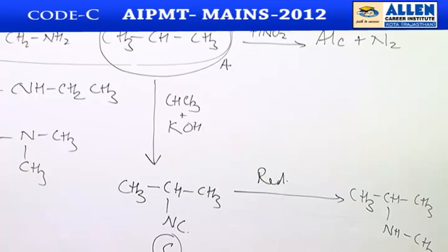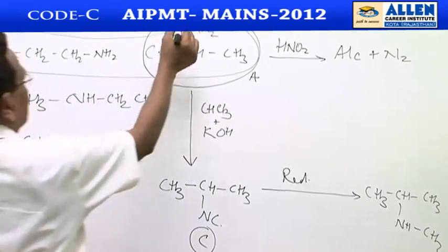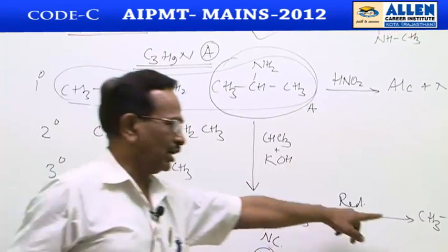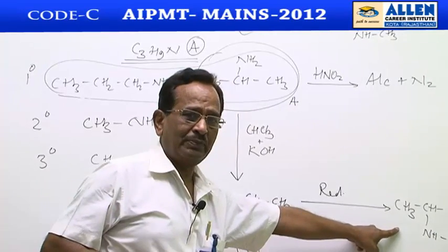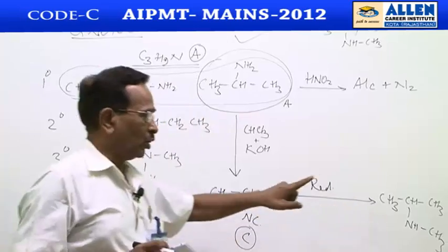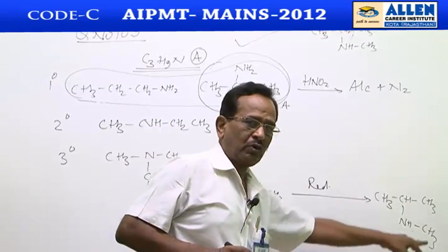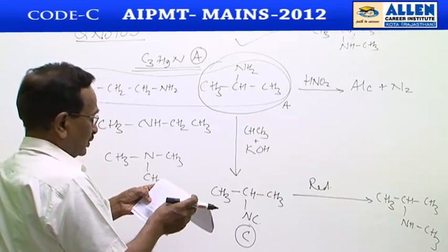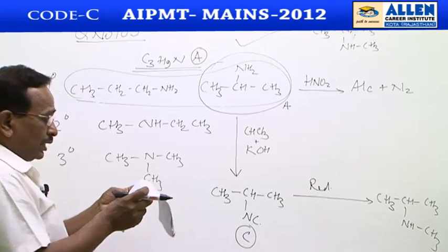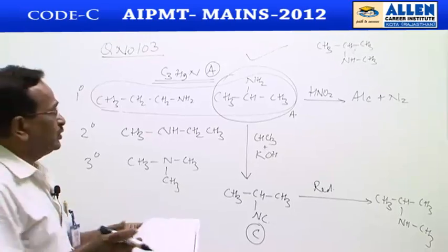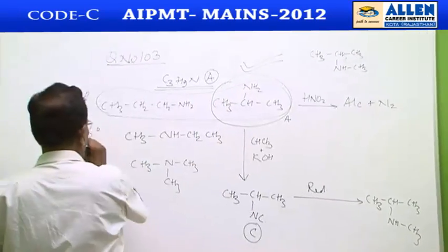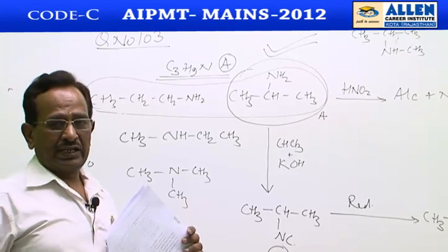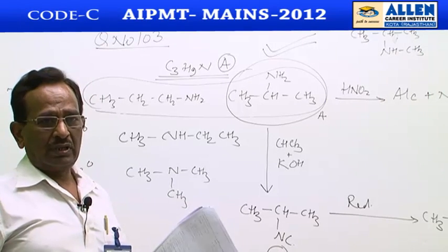Now predict the correct structure. Only this structure is correct - the primary amine isopropylamine. This is the correct answer. It will not be secondary or tertiary amine because these two amines do not react with HNO2 or give carbylamine reaction.